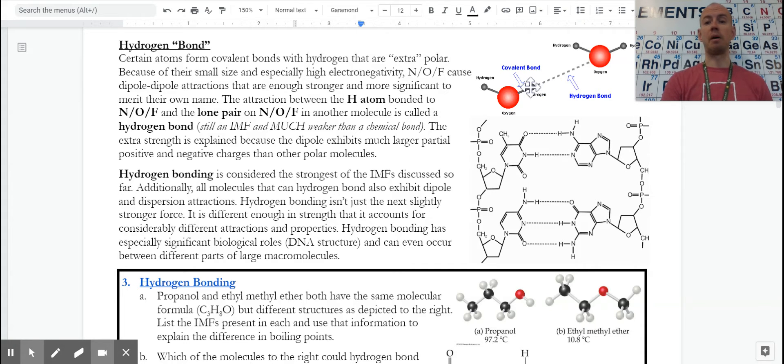That partial positive on that hydrogen is going to be more strongly attracted to a neighboring oxygen atom. It's really not necessarily the lone pair, but the negative dipole on an N, O, or F. They do have to have some lone pairs in order to be able to do this, but it is the negative dipole resulting as a result of the lone pair that makes this attraction especially strong.